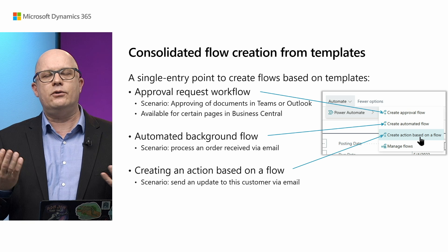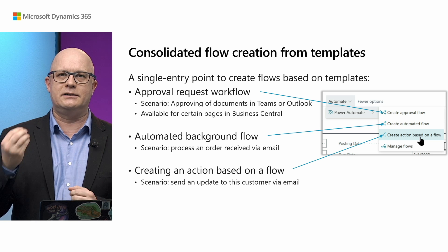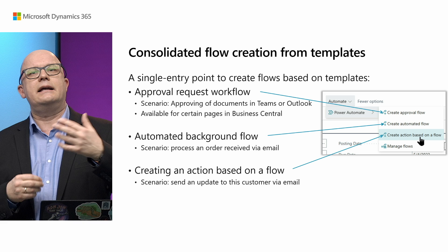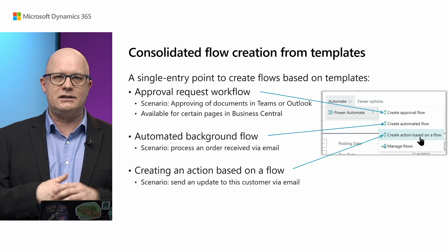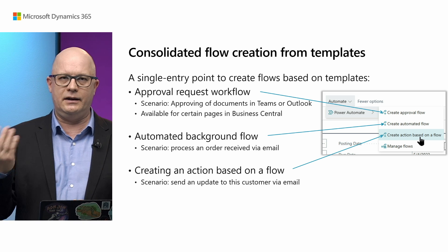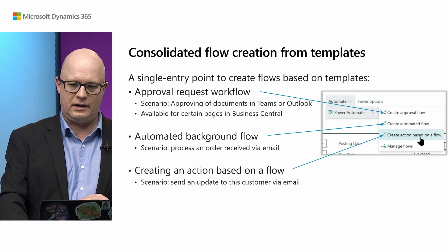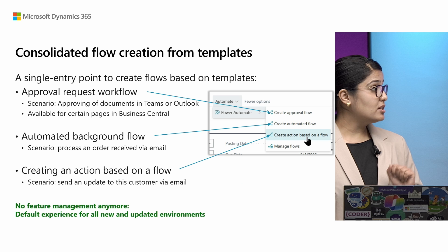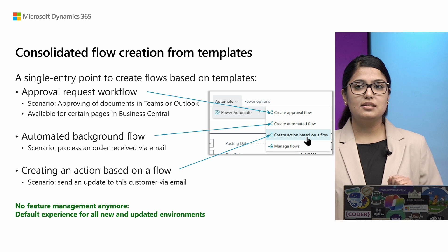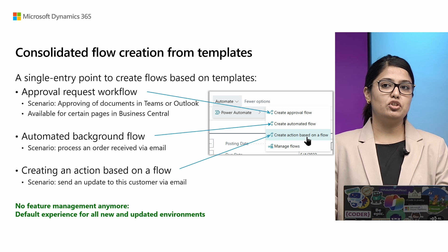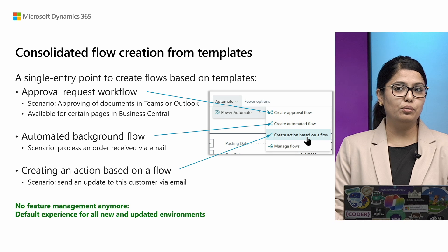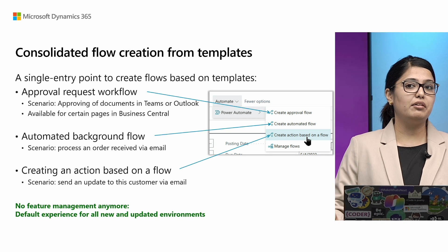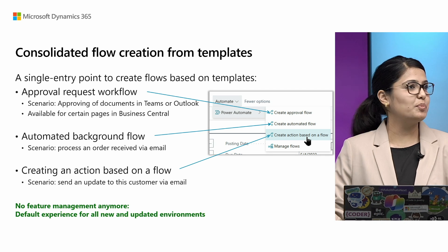You can also build an action based on a flow — for instance, sending an update to a customer via email or other means. And from this wave onwards, we don't need feature management. This is the default view that we will get, so the single entry point will always be available.